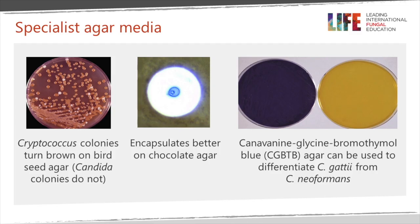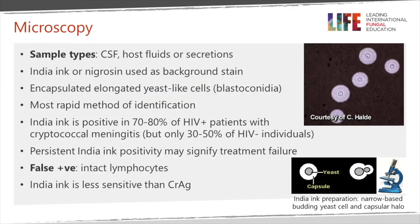Birdseed agar is useful specifically to separate candida from cryptococcus, because the colonies of cryptococcus go black on birdseed agar whereas candida colonies do not. If-a-bidin glycine broth with far more blue agar can be used for distinguishing C. gattii from the C. neoformans varieties or species, and there is better encapsulation on chocolate media than on birdseed agar.